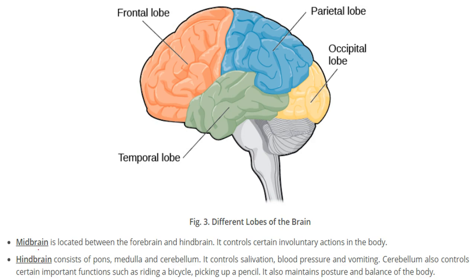The midbrain is located between the forebrain and hindbrain. It controls certain involuntary actions in the body. Voluntary actions are things like walking, but involuntary actions are those which do not happen by themselves — the brain needs to direct the body part to do something. So the midbrain controls involuntary actions, not voluntary actions like walking.